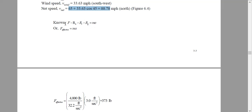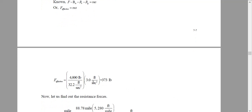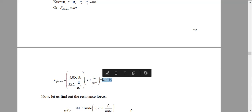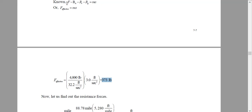The equation is: F_applied minus all resistances equals ma — the effective force. We need to maintain an acceleration of 3 ft/s², and mass equals weight divided by g. So the effective force, which equals mass times acceleration, is the portion of applied force that actually produces motion. Once we know the effective force and resistances, we can calculate the required applied force.